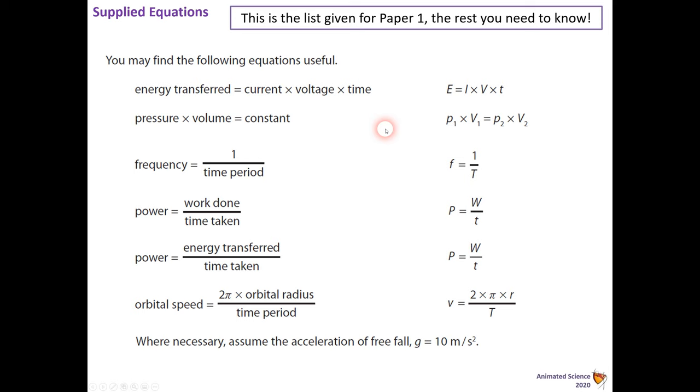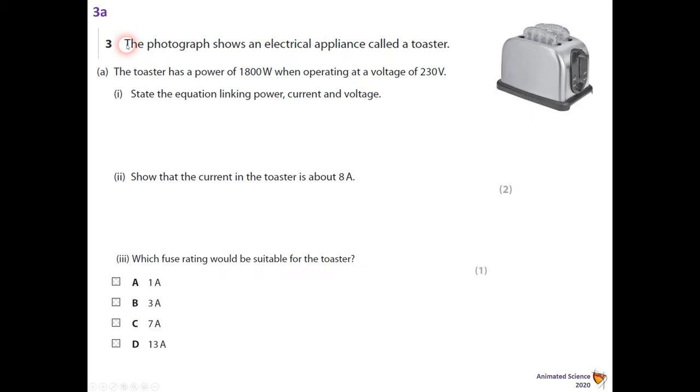Let's see what we've got. So the photograph shows an electrical appliance which we obviously know is a toaster. The toaster has a power of 1800 watts when operating at a voltage of 230 volts, or potential difference measured in volts at 230 volts.